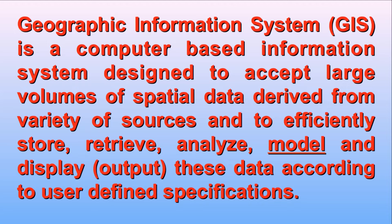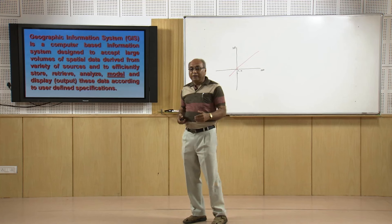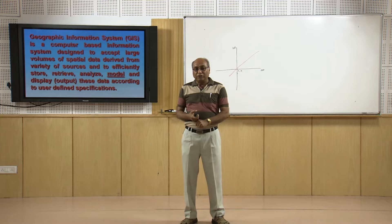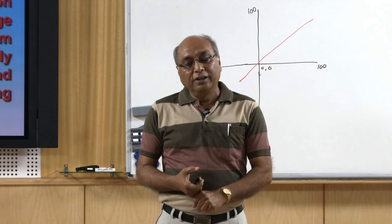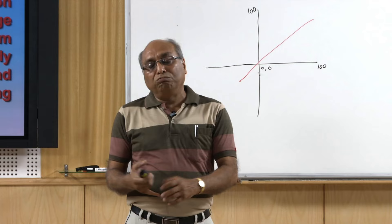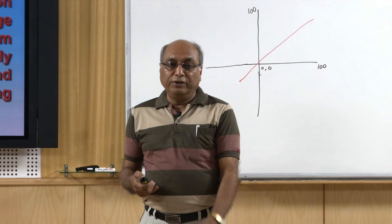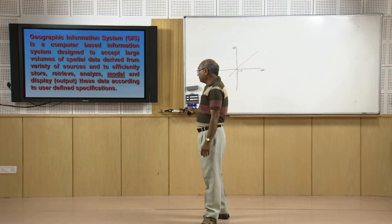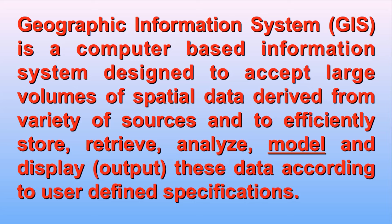This data can come from a variety of sources — maybe remote sensing data from satellites, data from the field, data from internet sources or various instruments. The data can come directly into GIS given that it fits the required format. The other purpose of GIS is to efficiently store data. If data is not stored properly in an organized and formatted fashion, retrieval of the data becomes very difficult.